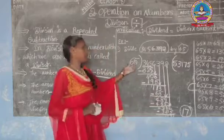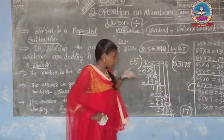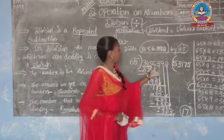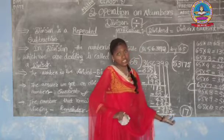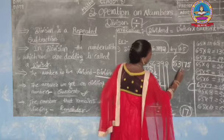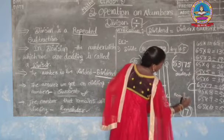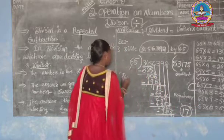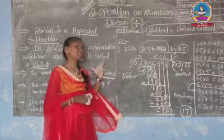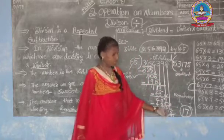The remainder 17 is smaller than the divisor 65, confirming the division is complete. The quotient is 53,175. This is the answer. The divisor is 65, the dividend is 3,456,392, the quotient is 53,175, and the remainder is 17.